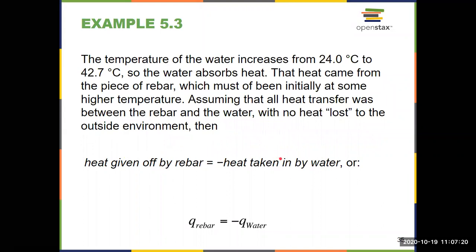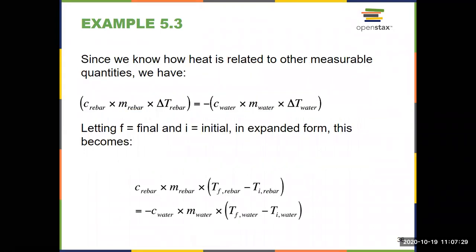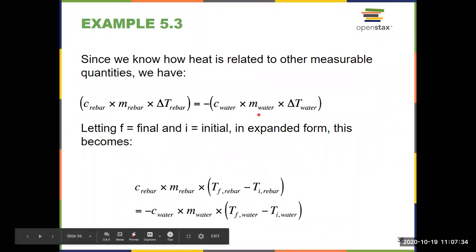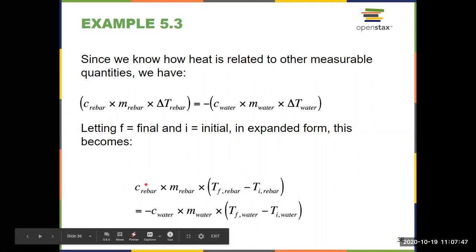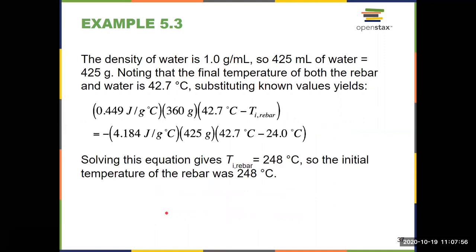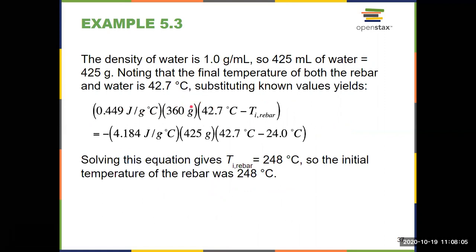So with that in mind, let's see how this question is solved. Q_rebar equals negative Q_water. Q equals MC delta T, so: m_rebar times c_rebar times (T_final minus T_initial of rebar) equals negative m_water times c_water times (T_final minus T_initial of water). I plug in the specific heat of the rebar, the mass of the rebar, and the final minus initial temperature of the rebar, along with the specific heat of water, mass of 425 grams, and temperature change of the water. Solving for it, you get the initial temperature of the rebar: 248 degrees Celsius.